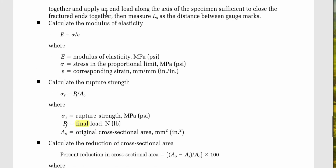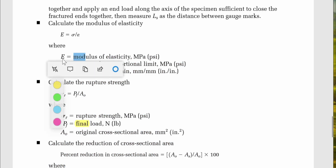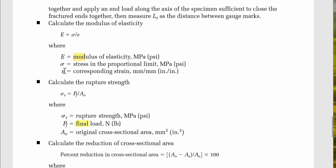Apply an end load along the axis of the specimen sufficient to close the fracture ends together, then measure L_S as the distance between gauge marks. Calculate the modulus of elasticity: E = stress / strain, where the stress is at the proportional limit in MPa and epsilon is the corresponding strain in mm/mm.